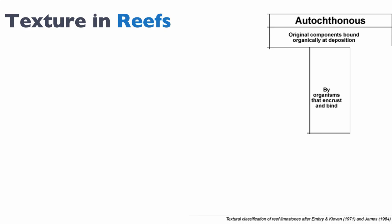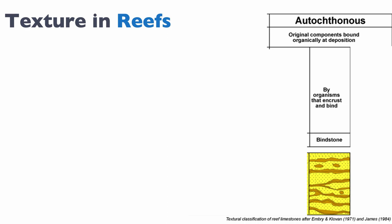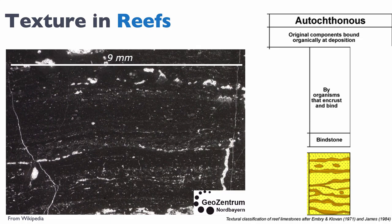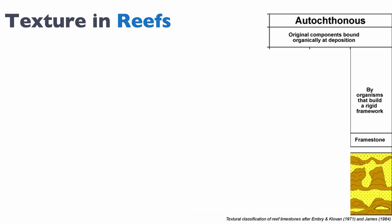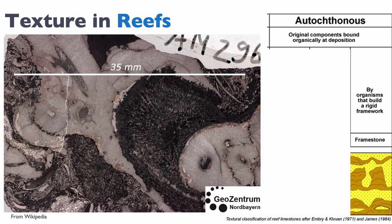If the organisms are encrusting or binding, then we have what is known as a bindstone. Here's an example of a bindstone — this is effectively an algal mat that binds the sediment together. Finally, you can also have organisms that build a rigid framework, like a full reef, and then we talk about a framestone. Here's an example of a framestone — this is an ancient reef that is interconnected and forms a framestone.